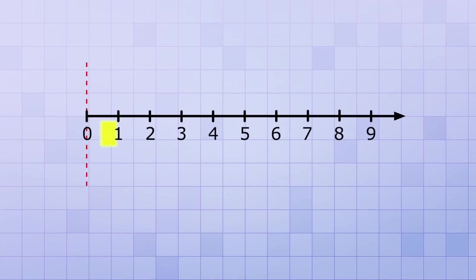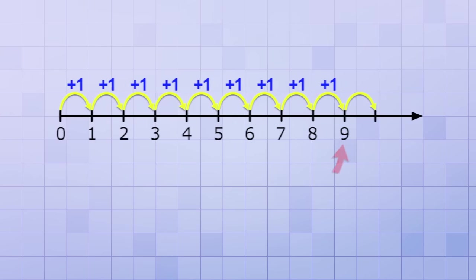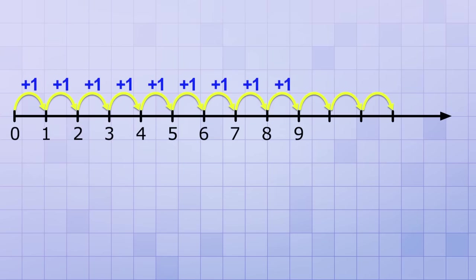Starting from 0, moving right to the first mark is an increase of 1. Likewise, moving from 1 to the next mark, 2, is also an increase of 1. In other words, you just add 1 to get to the next number. And even though our current number line stops at 9, we could continue the process of adding 1 to make it longer if we wanted to.